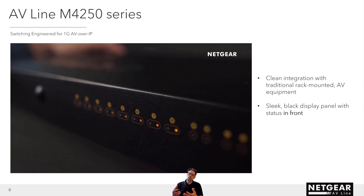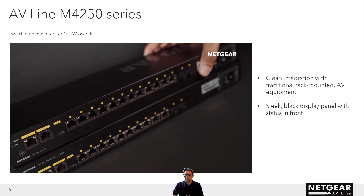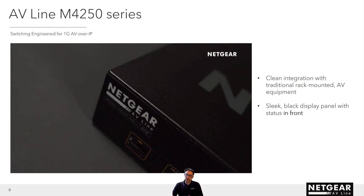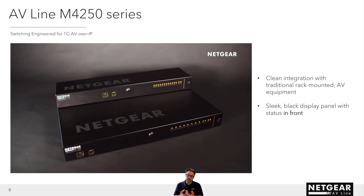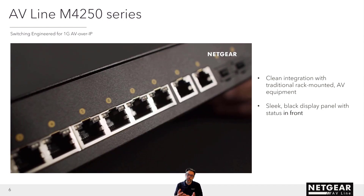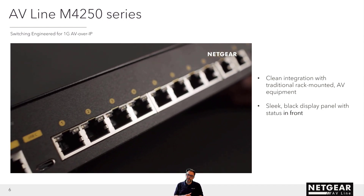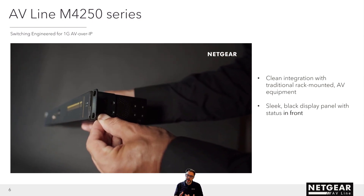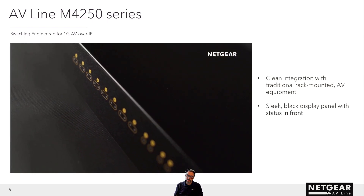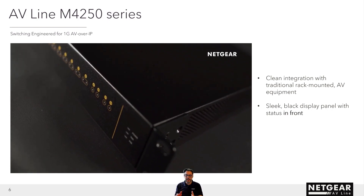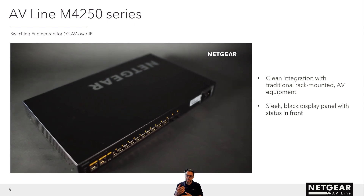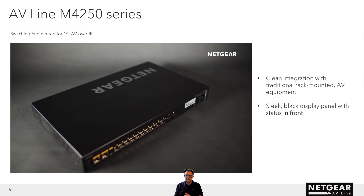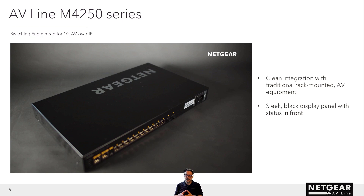Let's start with the all-new AV line of M4250 switches. They were built from the ground up with input from the Pro AV community. In the front, you have a black display panel with status info — and that's it, nothing else. We've turned the switch around so that you can rack-mount it in a typical AV rack and it will look extremely good, unassuming. All cabling plus additional status is in the back, but reversed mounting is possible when you need the ports on the front of the rack.